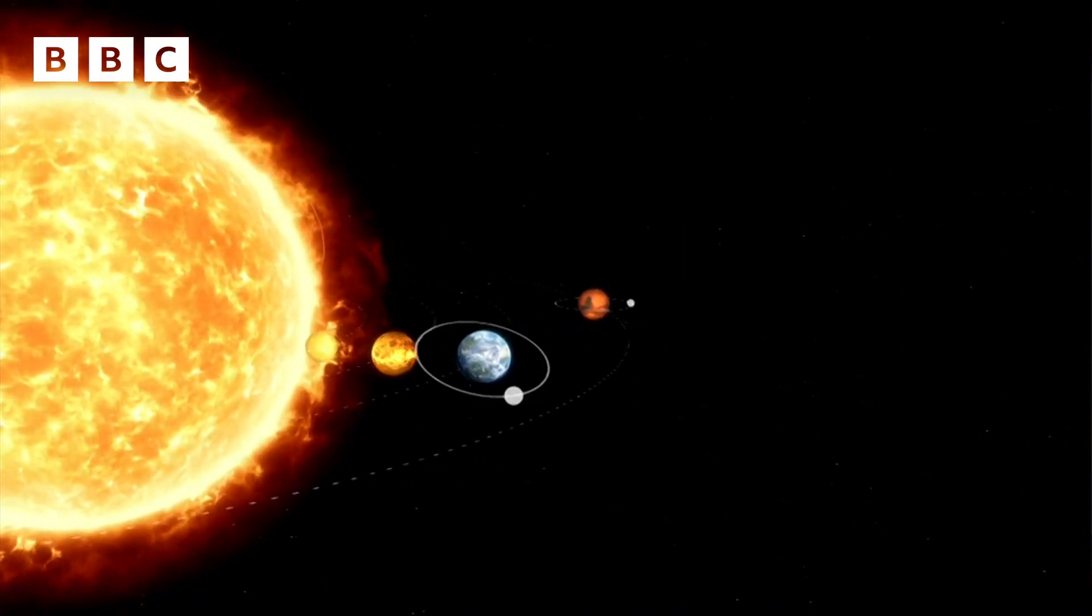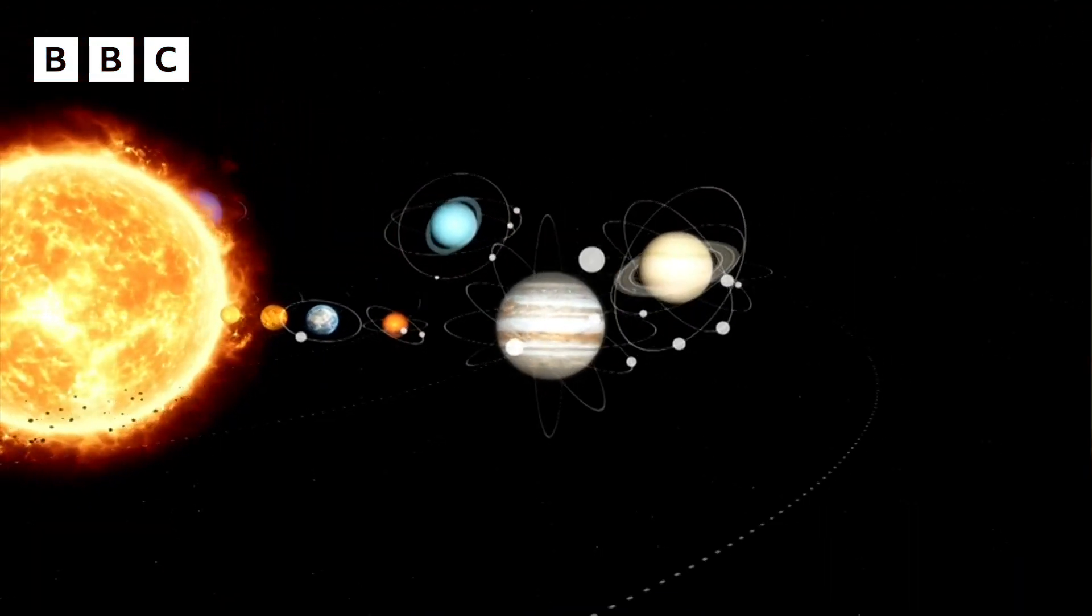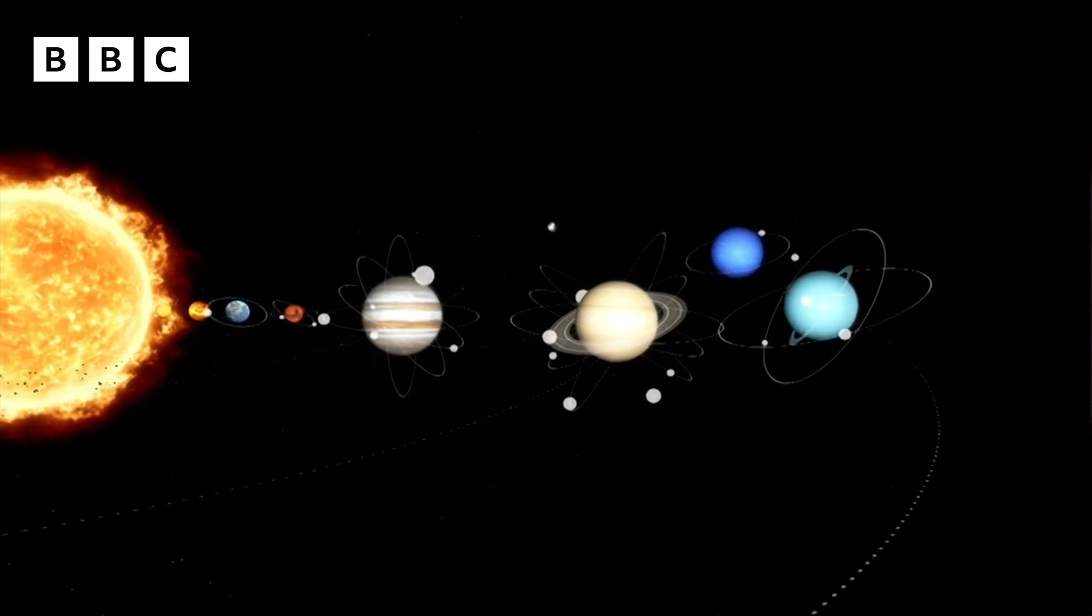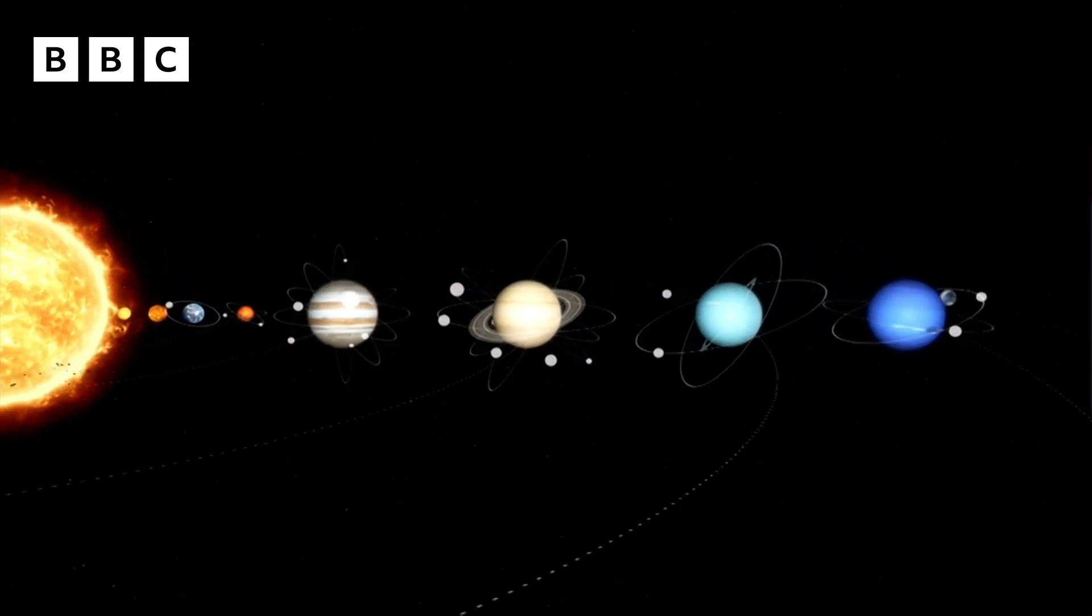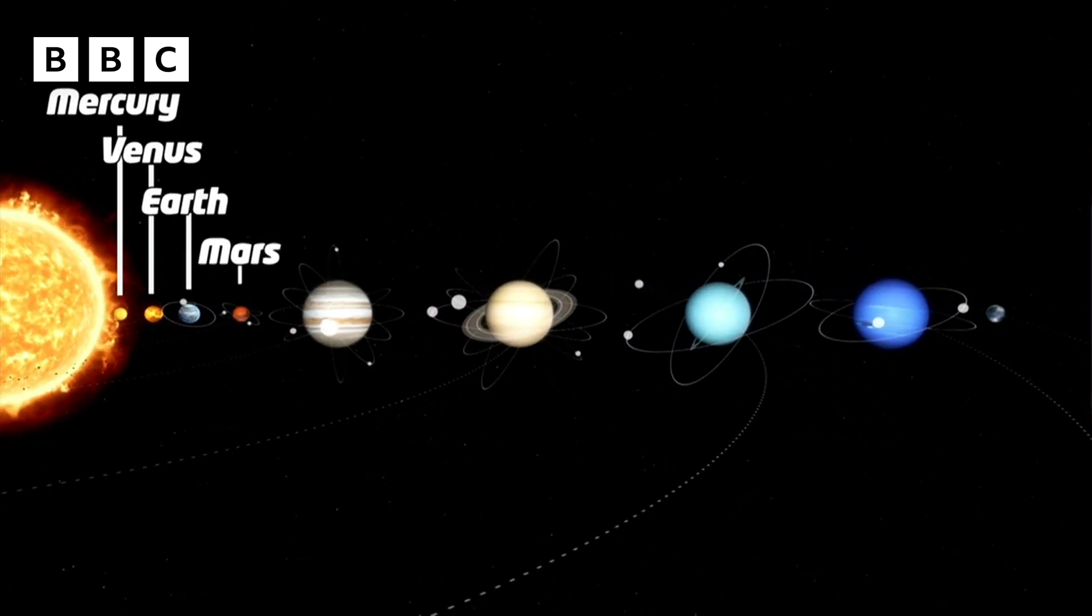The planets in our solar system are named after Roman gods and goddesses. Originally we only knew about six planets: Mercury, Venus, Earth, Mars,